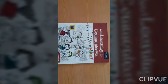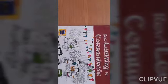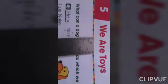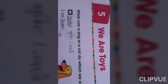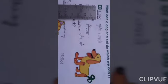First of all, students, take out your English book and open page number 48 in it and it is chapter number 5, We Are Toys. Kids, it is page number 48 and lesson number 5, We Are Toys. Now, let us know the meaning of some difficult words of this lesson.